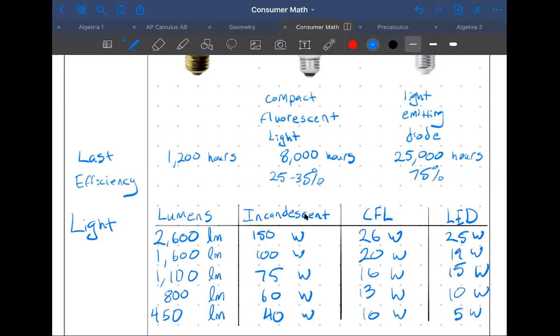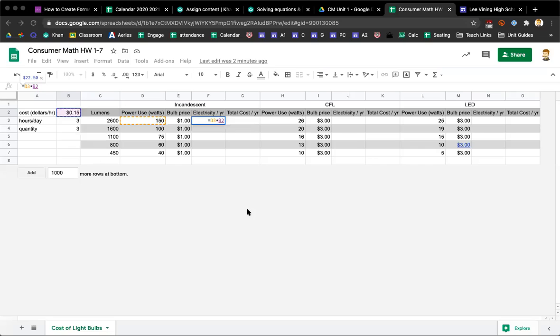Now I want to switch gears to our homework assignment. We need to multiply that by the hours per day. So now I'm going to say times, so shift 8 times, and then it's going to be this cell underneath the one we just clicked on, times b3. Then also by however many light bulbs we have, times that quantity, so times b4.